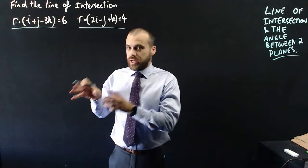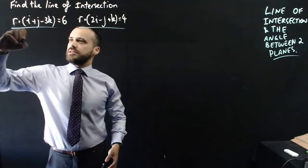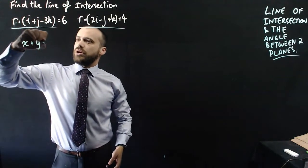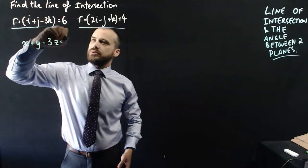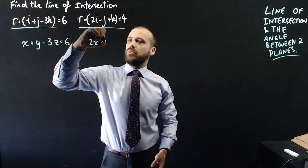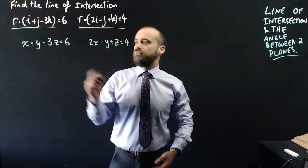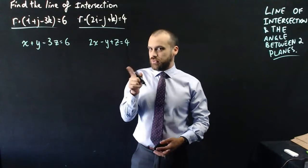Now, converting these to Cartesian form is our first step. So, that's going to be relatively easy. It's just going to be x plus y minus 3z equals 6. And 2x minus y plus z equals 4. So, there are two Cartesian forms.